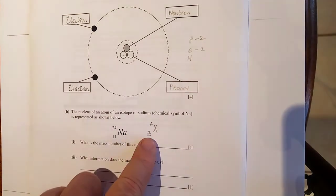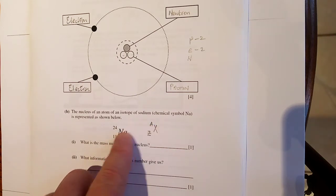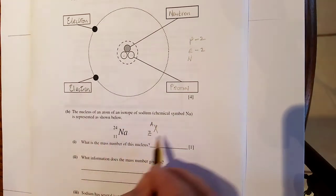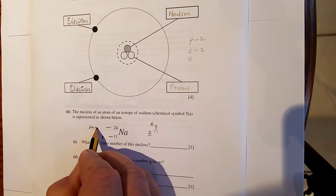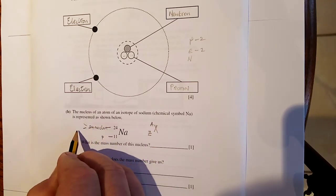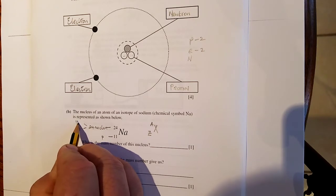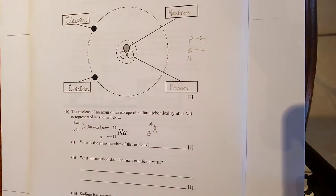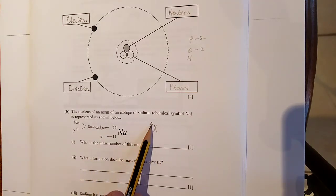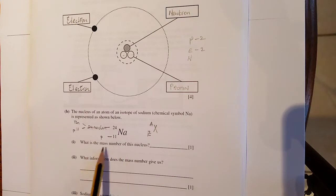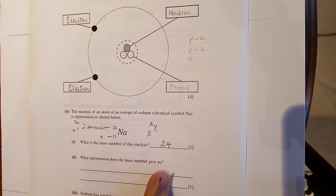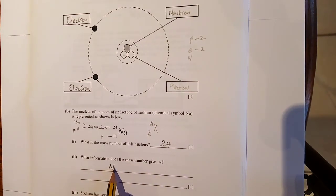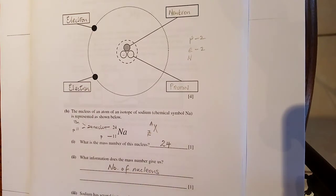So we're going to the next question. The nucleus of an atom of an isotope of sodium is represented by this. So remember, you should be putting in a cross zebra. It's called exam technique. So I know there's 11 protons. There's 24 nucleons. So here we go. There's 11 protons, so there's 24 nucleons, of which there is 11 protons. So there must be 13 neutrons. So there's my spade work done for this question.